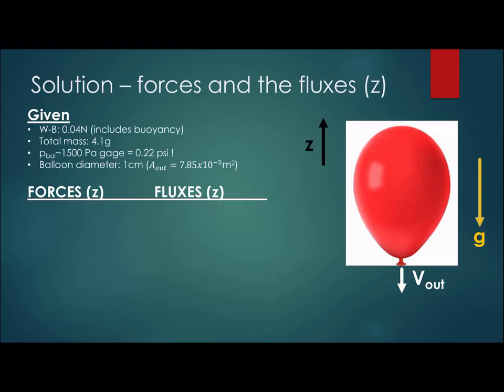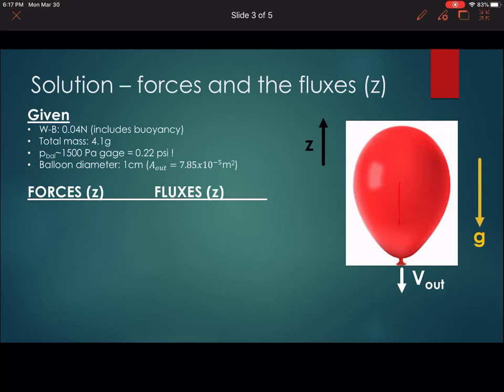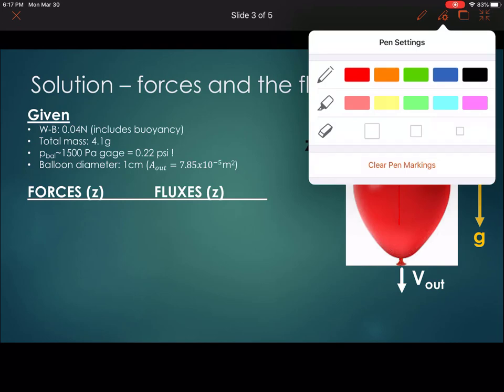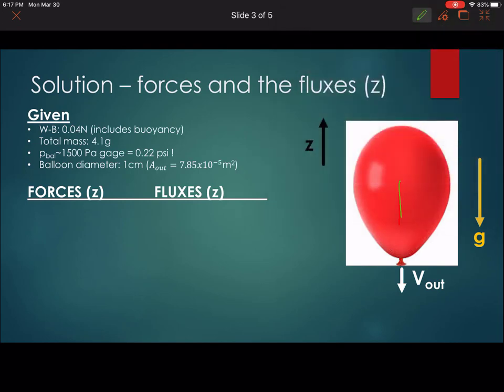Okay, so the solution to this is a relatively straightforward forces and fluxes, right? So the forces on the system, we have the weight and the buoyancy. So I guess I shouldn't use a red pen when I'm drawing on a red balloon. So we have acting downward, we have the weight minus the buoyancy that is attracting the balloon to the earth. What other forces do we have in place?